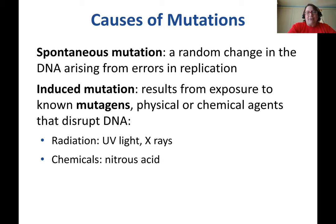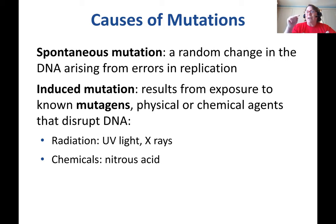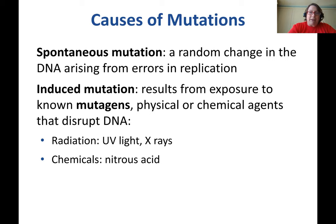There are different kinds of causes of mutations. A spontaneous mutation is a random change in DNA arising from errors in replication. When we talked about DNA polymerases, we noted that the polymerase reads the major groove in the helix and can detect an incorrect base — but that's not 100%. Certain bacteria and certain polymerases are more error-prone than others, and some polymerases let a certain number of errors go. That would be a spontaneous mutation.